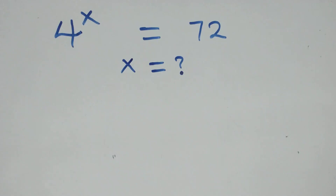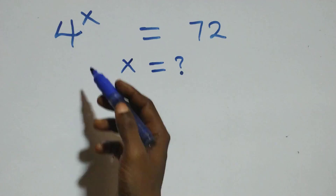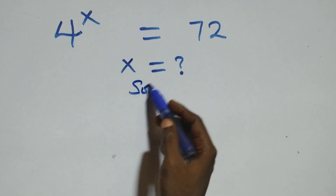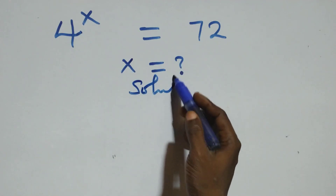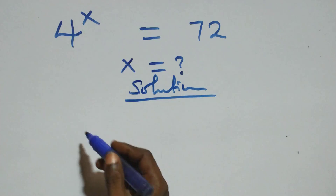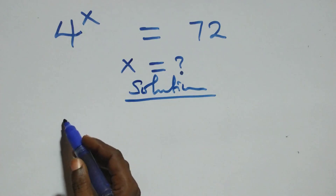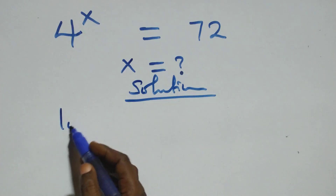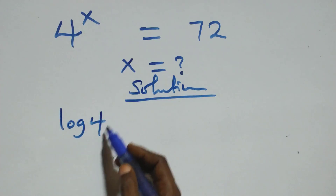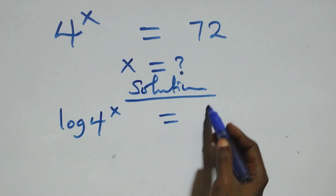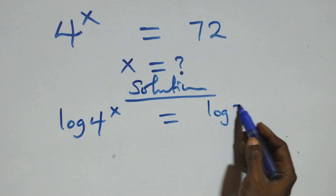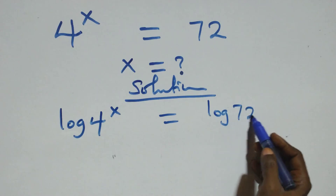Hello, you're welcome. How to solve this nice exponential equation — solution from here. What we have here, we take the log on both sides. At this we have log 4 raised to power x equals to log 72 from here.